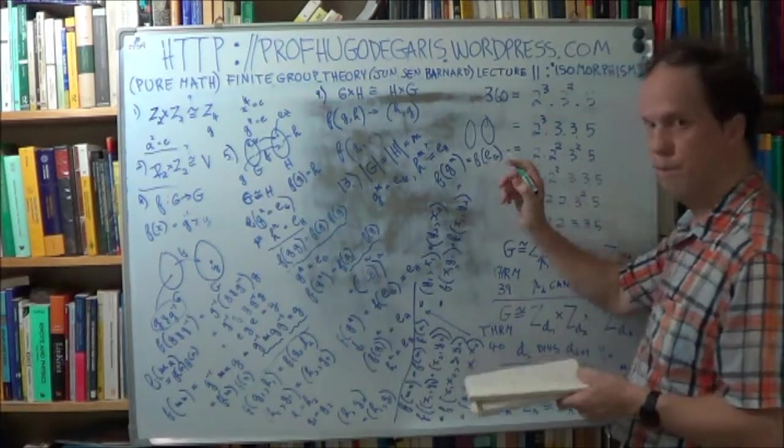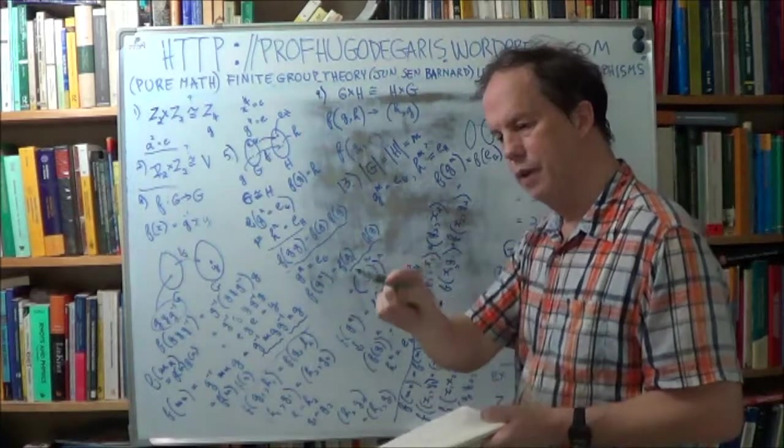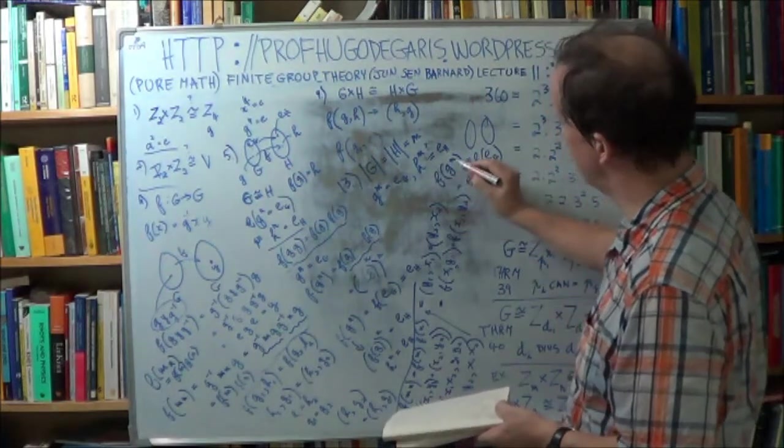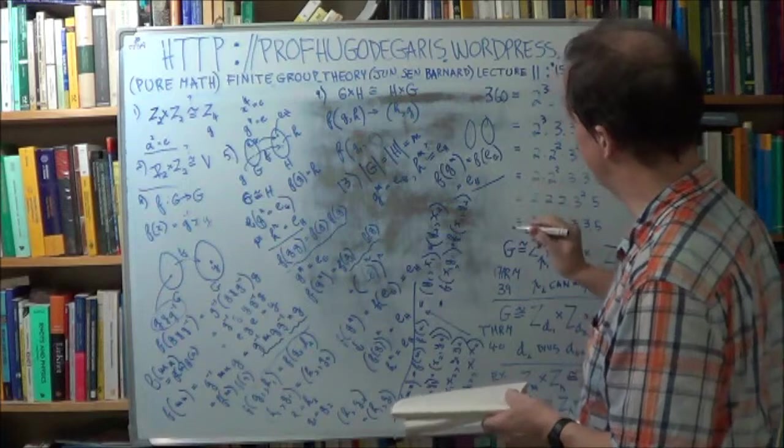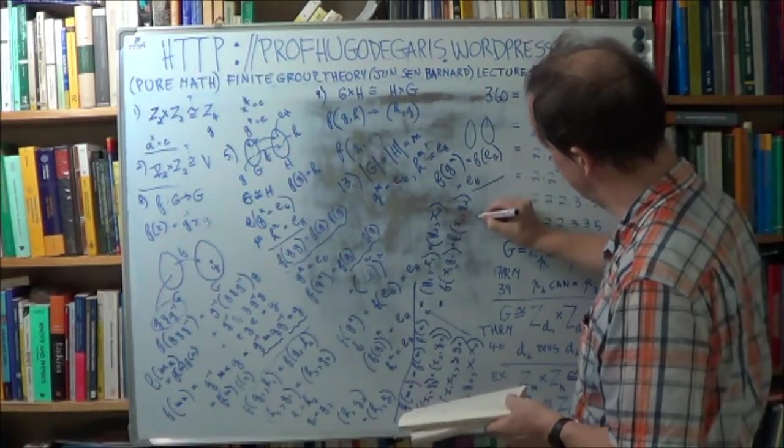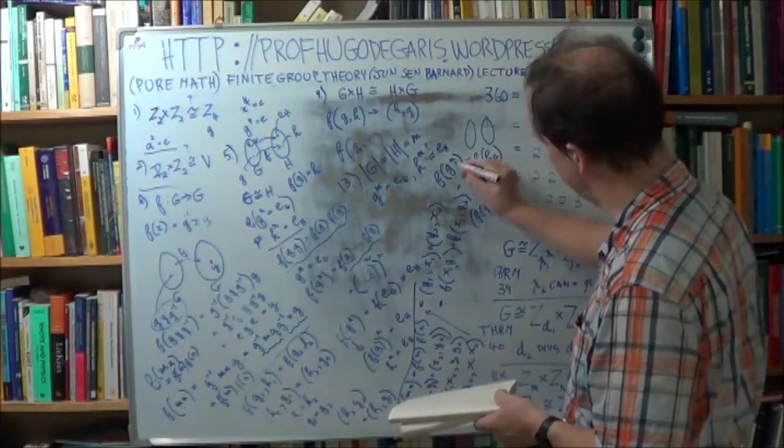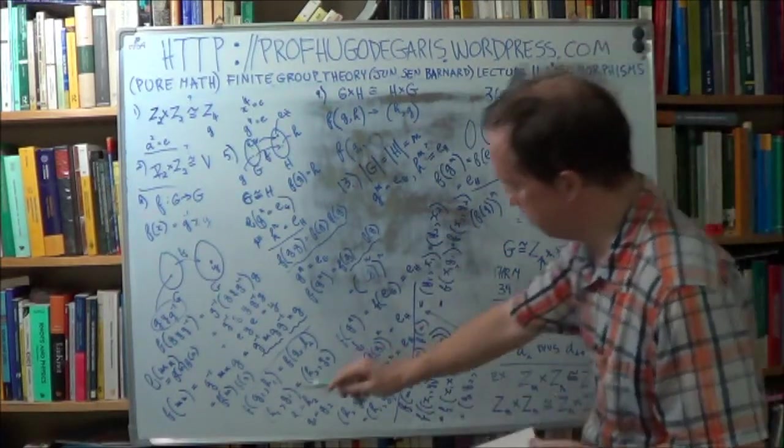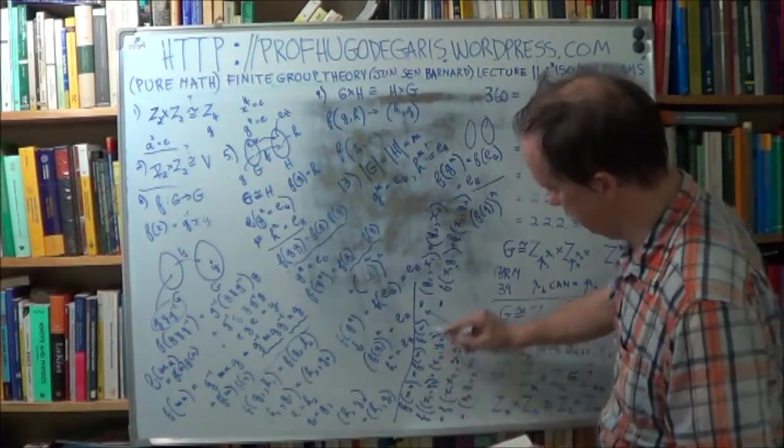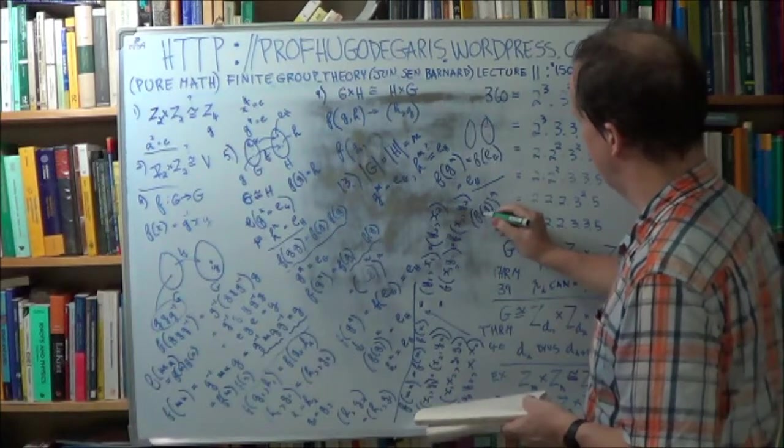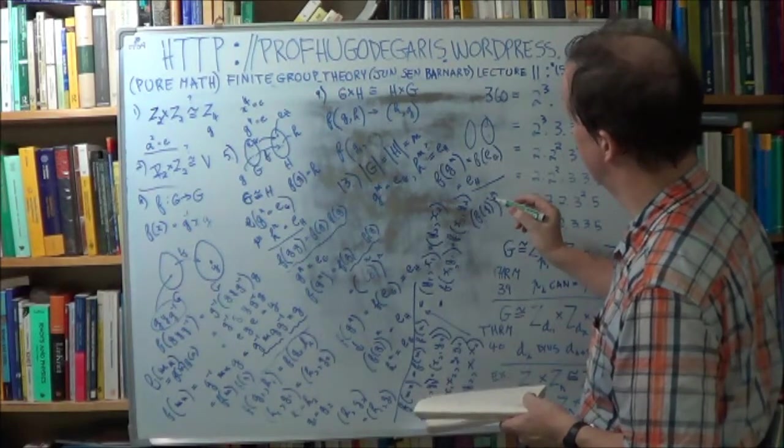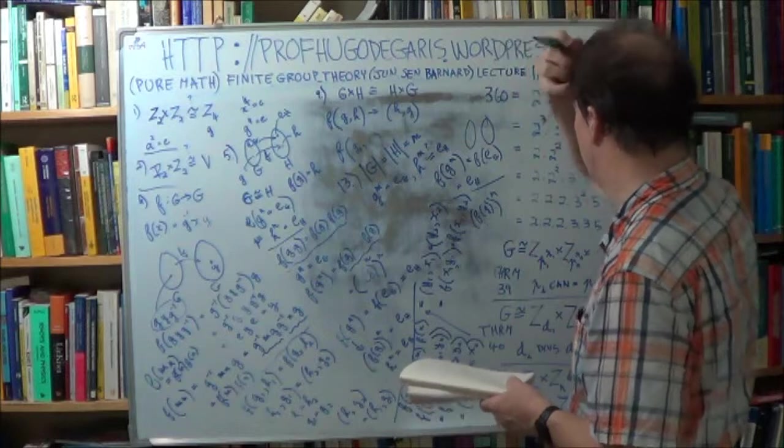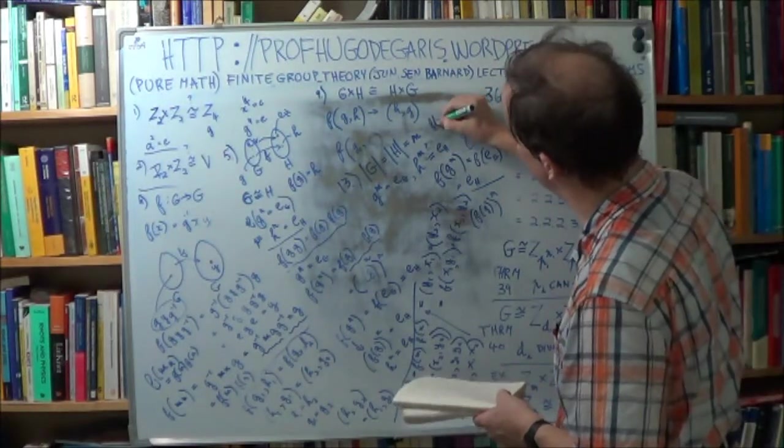Now, remember that theorem, that when you have two groups isomorphic, the unit element maps. So this is just e to the h. So f of g to the m is e to the h. Now, you can rewrite this as f of g m times, and we did that here, in the same sort of reason, by using this kind of property. Now, f of g is what? f of g is h. Let f of g be h.